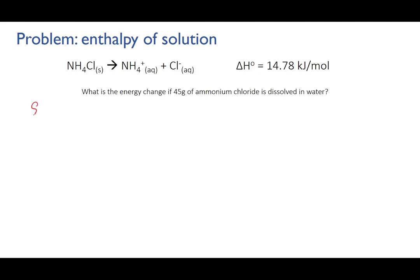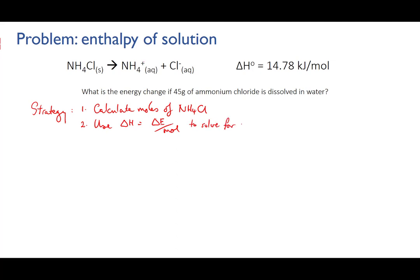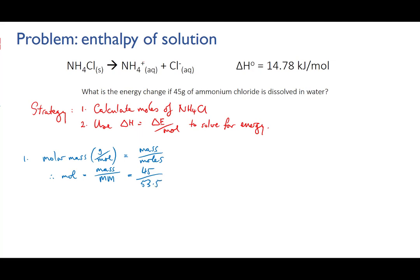Our strategy is this: first, we have a mass of ammonium chloride and we have to convert that to moles. We'll calculate the moles of ammonium chloride present. Second, we will use the relationship that enthalpy equals energy over moles to solve for energy, because we have an enthalpy value and we will have a moles value. We use the molar mass equals mass over moles relationship, rearranged to make moles the subject. We have 45 grams, and the molar mass of ammonium chloride is 53.5 grams per mole, giving us 0.841 moles of ammonium chloride.